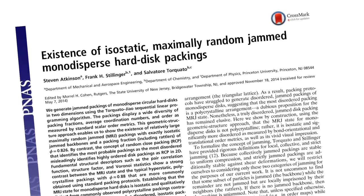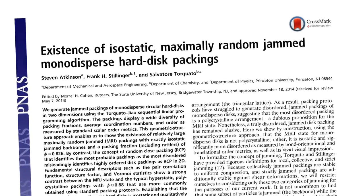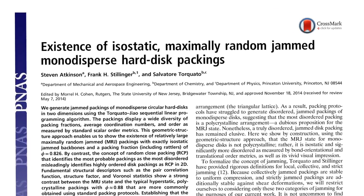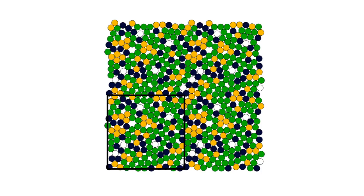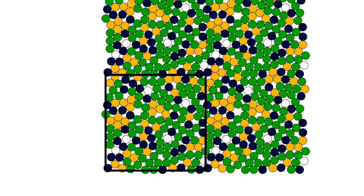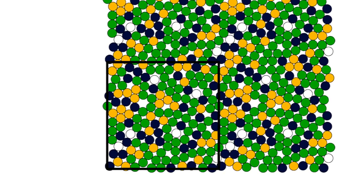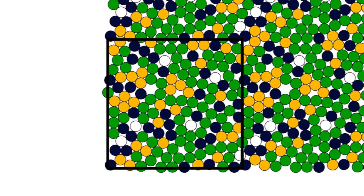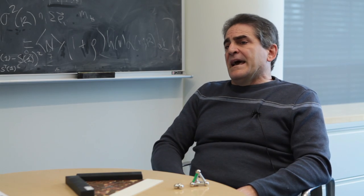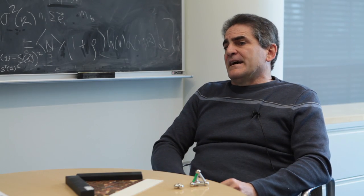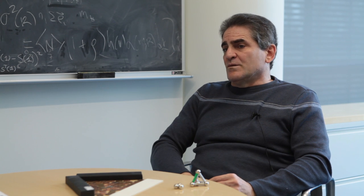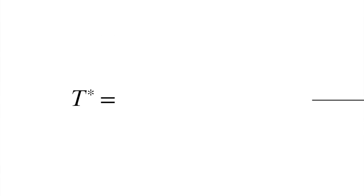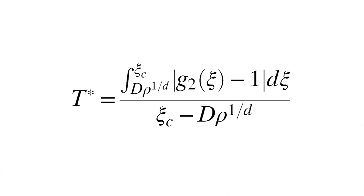One of the things that we showed in this PNAS paper is that these disordered packings of pennies do exist. They have a much lower density than these ordered ones, and they are in fact disordered as measured by what we call order metrics.